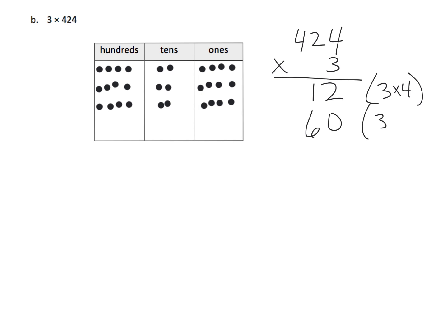How did we get that? We did three times twenty — three groups of twenty — and that gives us sixty. Then lastly, looking at the hundreds, we have three groups of four hundreds, so we have twelve hundreds. So what is that going to look like? Twelve hundreds, and that's because we did three times four hundred.